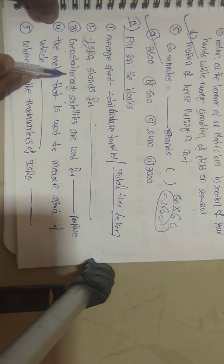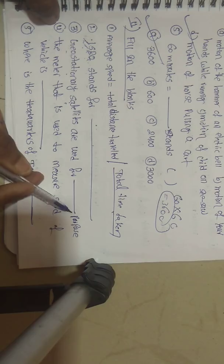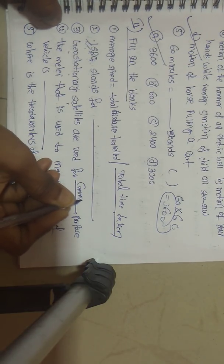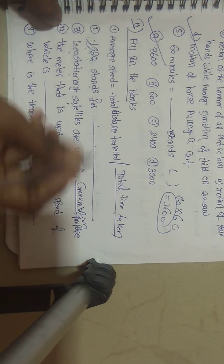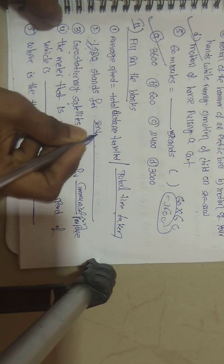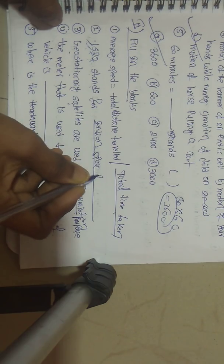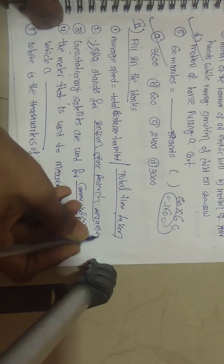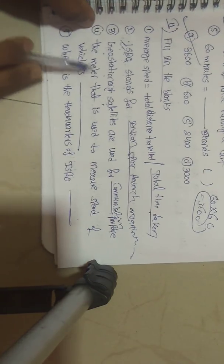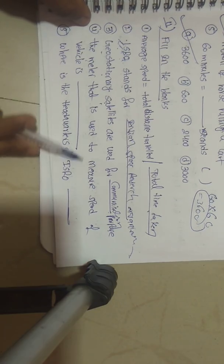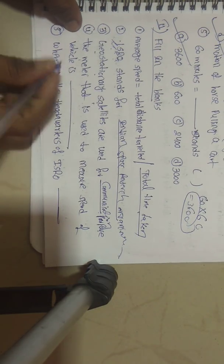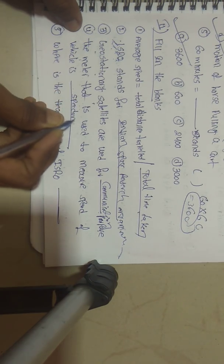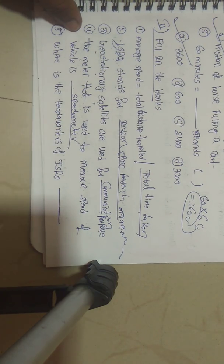Geostationary satellites are used for communication purposes. The instrument used to measure vehicle speed is called a speedometer. The answer is speedometer.